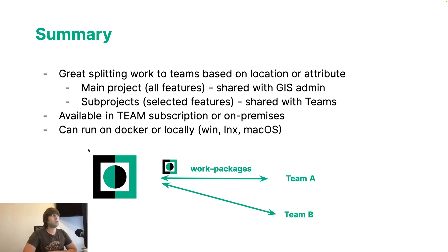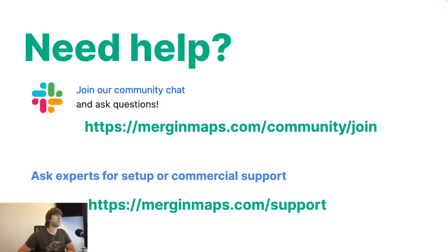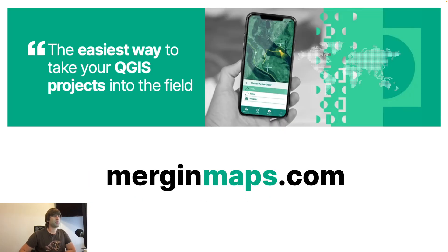To sum it up, this tool is great for splitting work to teams based on location, geolocation, or attribute. The main project with all features is great for GIS admins who need access to all data. The sub-projects are great for sub-teams for optimization of their work and security reasons. This is available in a team subscription or on-premises, and you can run it in Docker or locally if you have Python and a few requirements installed. If you need help, join our Slack community channel or ask us on support. Thank you very much for your attention.